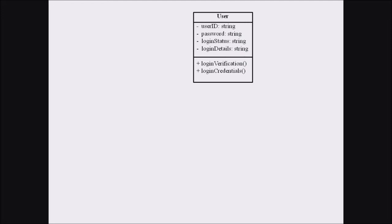All these attributes are string data and are private data members. The access specifiers are private, which means these attributes can be accessed only within this class or the class inheriting the properties from this class. We can see two different methods, and both these methods are public. The plus sign before the method name represents the public access specifier, while the minus sign before the attribute represents the private attribute.